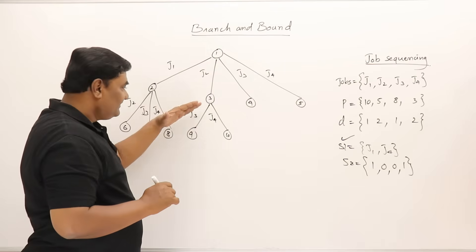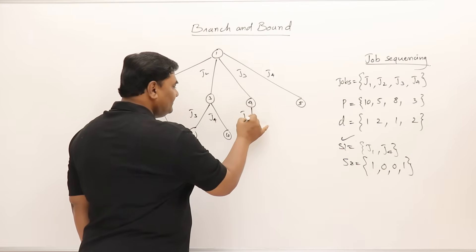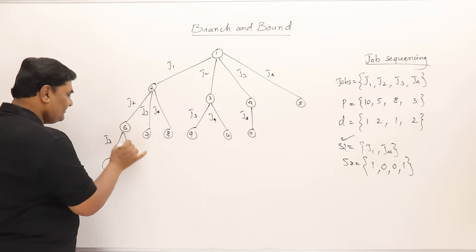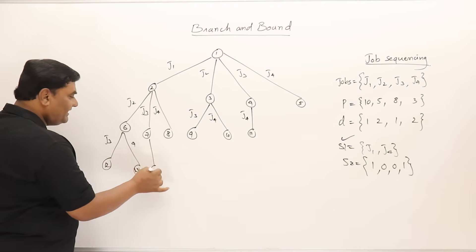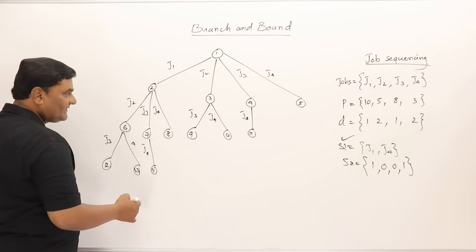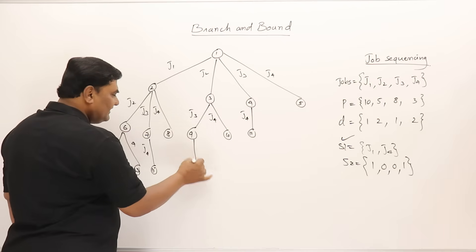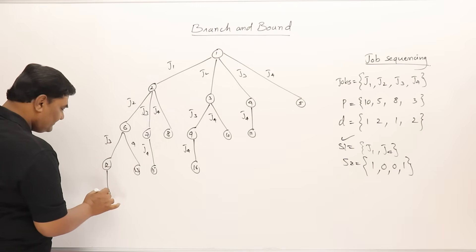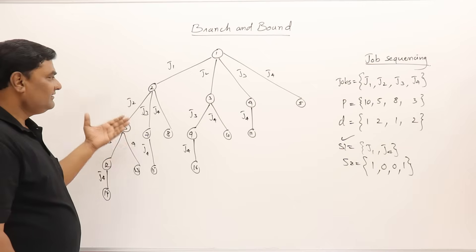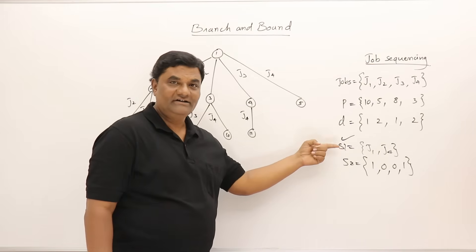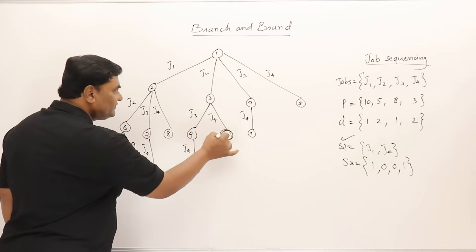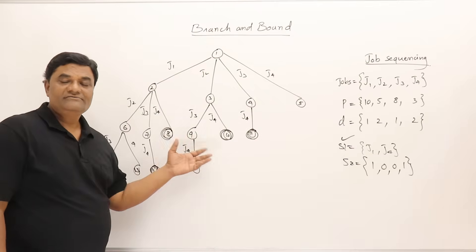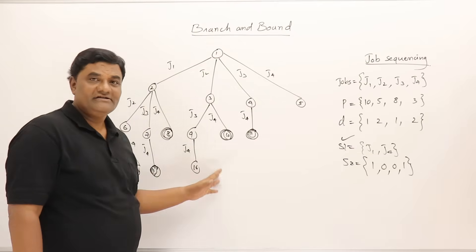Since the first job has already been discarded on this branch, we consider third job and fourth job, then only fourth job at node 11. Expanding node 12 gives third job or fourth job, and expanding that gives only fourth job at node 16. Node 17 covers the fourth job. This completes the state space tree for the subset method. Any node in this tree, for example, represents a combination like second job and fourth job, or third job and fourth job.